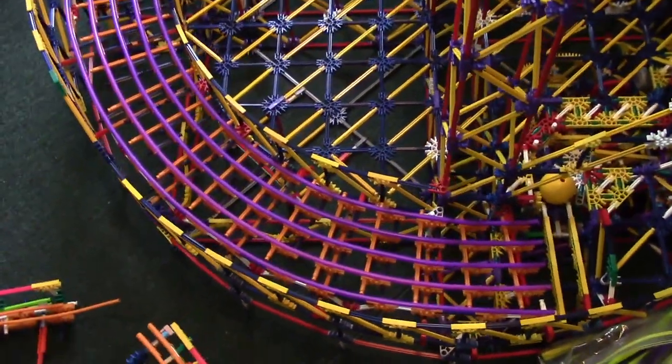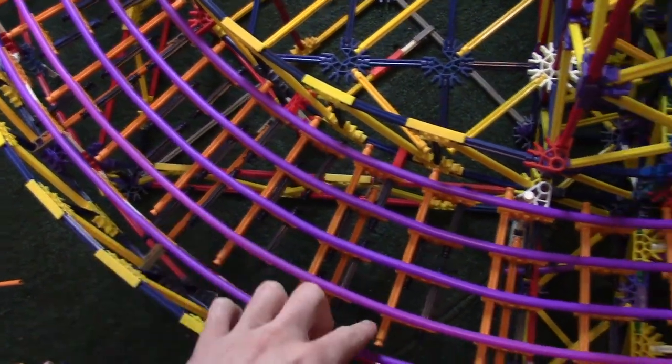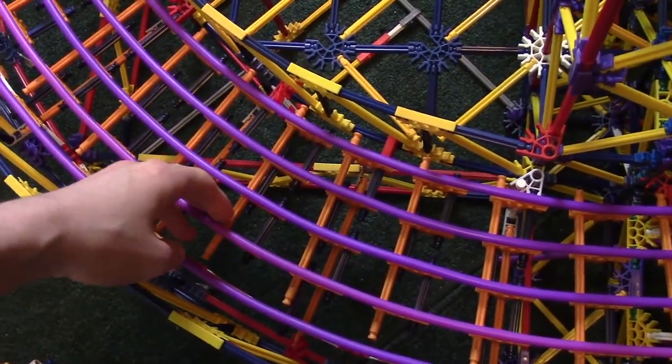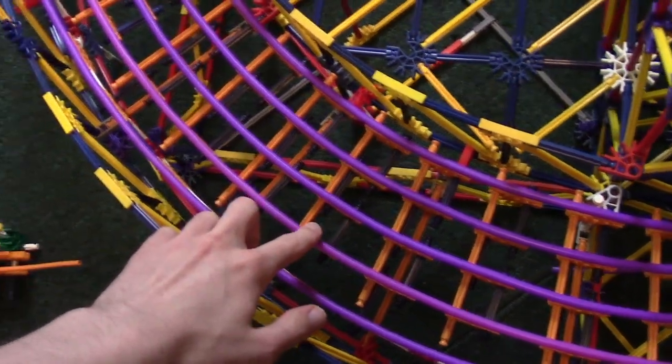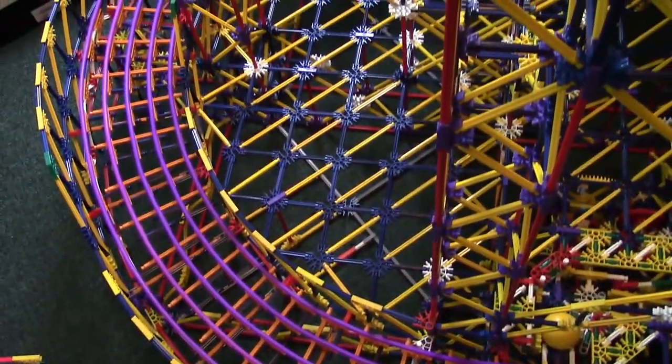Those extra ties have been inserted into the track. So like right there and there. Those aren't supported anywhere but they really do help the tubing stay straight or maybe I should say stay curved.